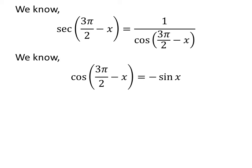We know the trigonometric identity: cosine of 3 pi over 2 minus x equals negative sine of x.